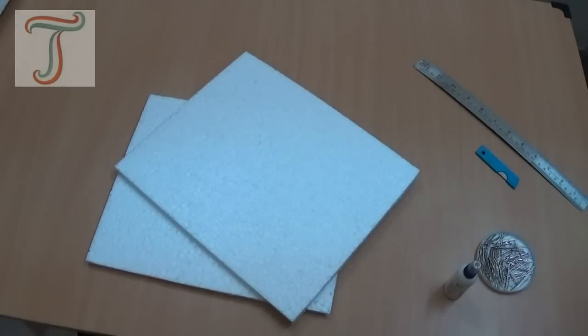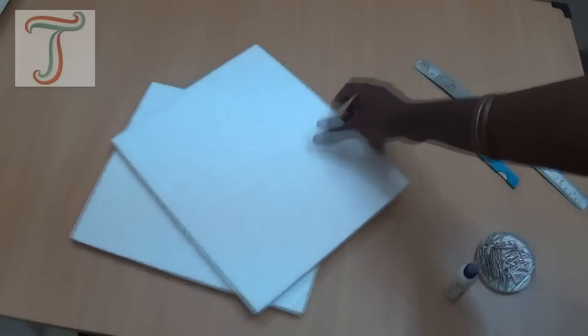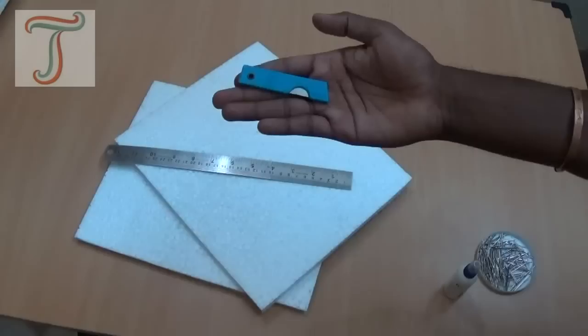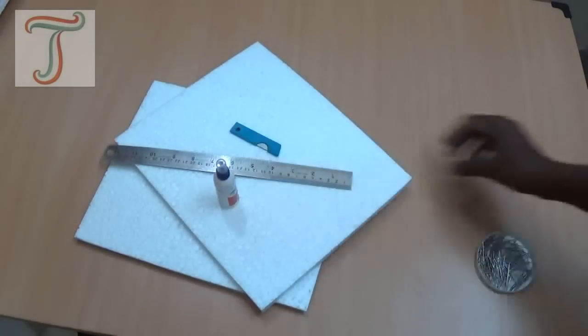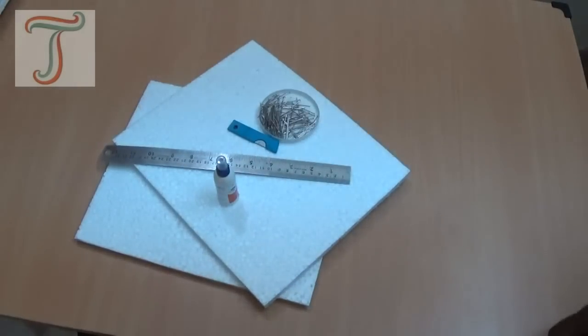How to make a bungalow house model. For making this you need thermopulse sheet, a ruler, small size knife, glue and pins. That's it. Let's start.